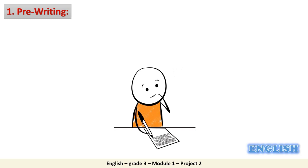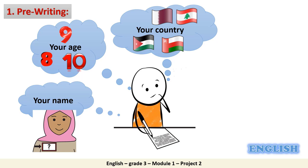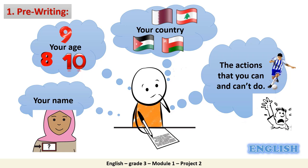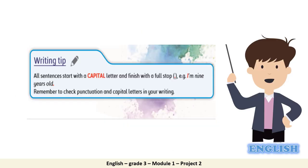Now let's start with the first step: pre-writing. As you know, today you are going to write a paragraph about yourself. In your paragraph, you should mention your name and your age, and even your country — where you are from. In addition to that, you should talk about the actions that you can and cannot do. Now we are going to recall the writing tip, which is on the student's book page 17. It says that all sentences start with a capital letter and finish with a full stop. For example: 'I am 9 years old.' The sentence starts with capital I and ends with a full stop. Remember to check punctuation and capital letters in your writing.